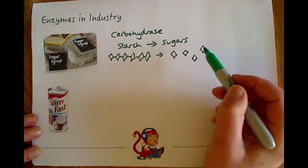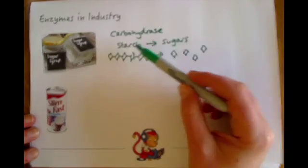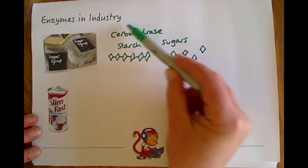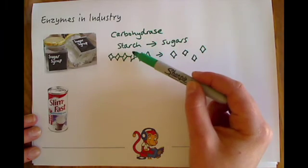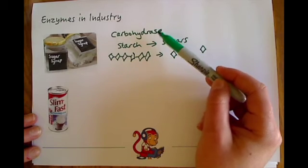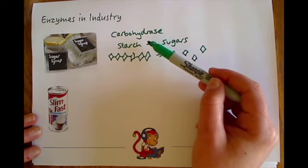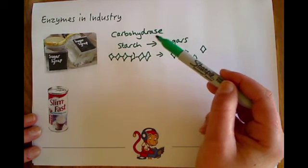If you remember in digestion we talked about amylase breaking down starch into sugars, which is completely correct. I mentioned at the time that sometimes they're more generally called carbohydrases, the enzymes that break down starch. So be aware in your test that you might see amylase or you might see carbohydrases. Amylase is the specific one that we talk about in relation to human digestion.